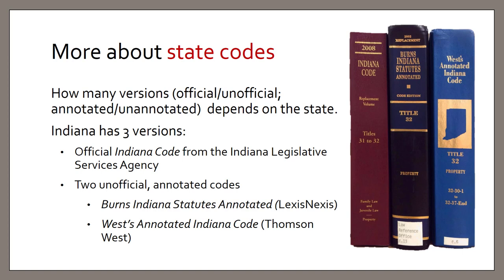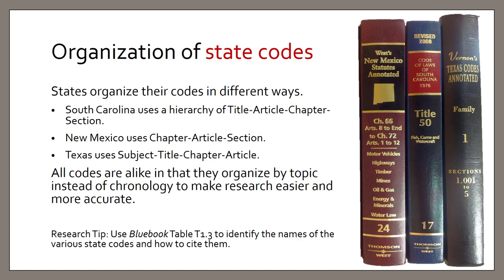States can have numerous code versions as well — an official one published by the government in most states, and then unofficial and annotated codes. Indiana has all three: the official Indiana Code, the Burns Indiana Statutes Annotated from LexisNexis, and West's Annotated Indiana Code from Thomson West. States organize their codes in different ways, though all have the sense of a hierarchy of subjects — a top level, intermediate levels, and a most specific level — and they can call those levels different things. South Carolina and Indiana use title, article, chapter, and section, while New Mexico and Texas use somewhat different terminology. But they are all organized by topic instead of chronology to make research easier and more accurate.